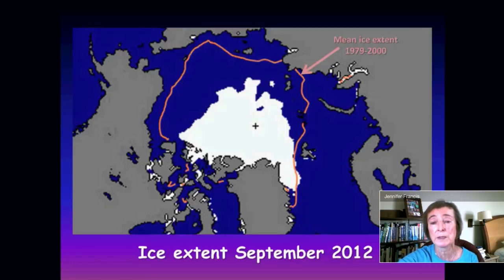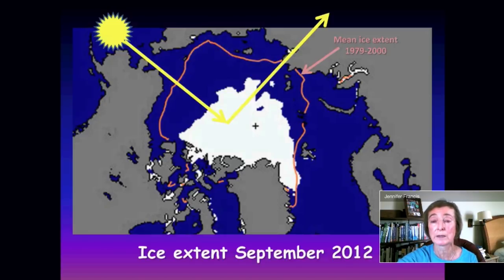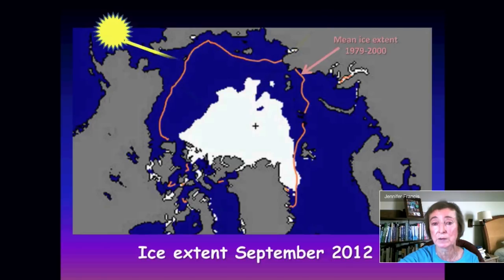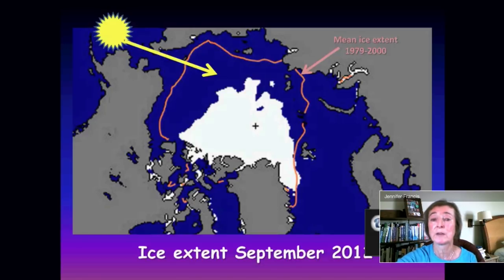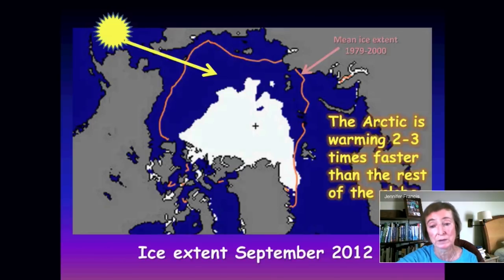Why do we care about this ice disappearing? One reason is that ice is very white — it reflects most of the Sun's energy when it hits it. This graph looking down on the North Pole shows the ice cover in 2012, that record year, compared to what it should be — indicated by the pink line. Because we're losing so much ice, instead of that sunshine being reflected back to outer space, it's now going into the ocean, heating it up, melting even more ice — setting up what we call a positive feedback. We melt ice, absorb more solar energy, warm the water, melt more ice. This is one reason why the Arctic is warming two to three times faster than the globe as a whole.